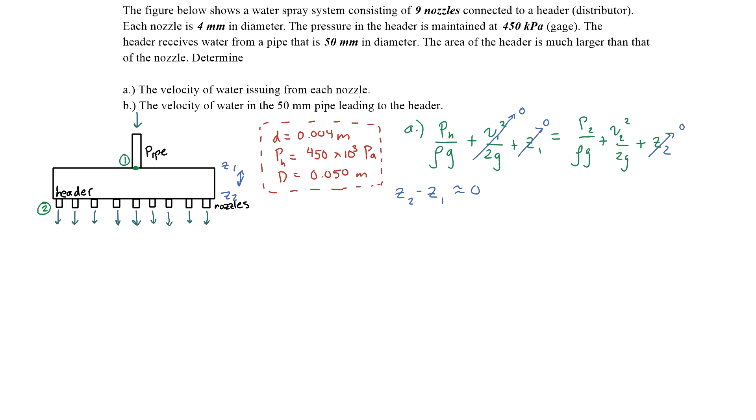Another one that we have to cancel out is the pressure at 2. In the problem, it states that the pressure in the header is maintained at 450 kilopascals gauge. So gauge pressure already takes into account atmospheric pressure. So we could say that the pressure of the header is the gauge pressure plus atmospheric pressure. But for P2, we could simply say that is atmospheric pressure because the water is leaving the nozzle and we're assuming it's just exiting into the atmosphere.